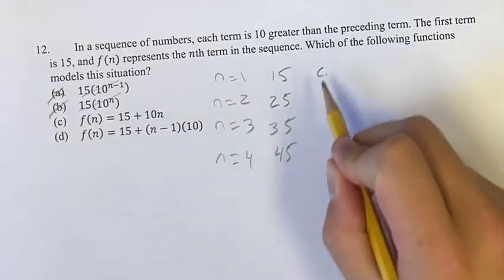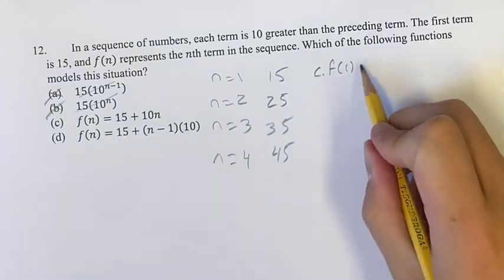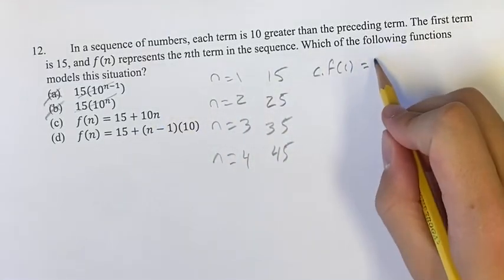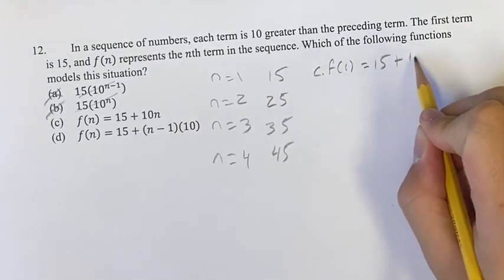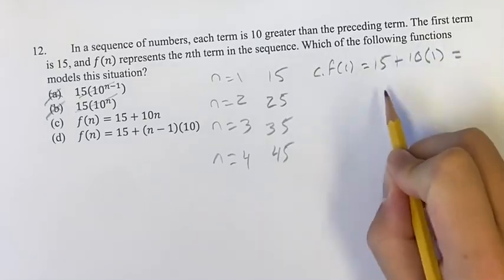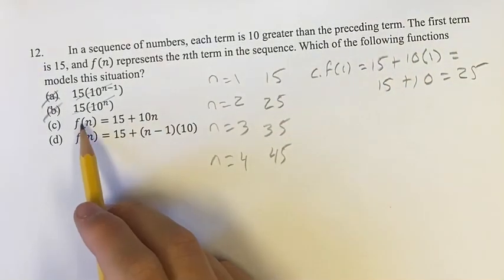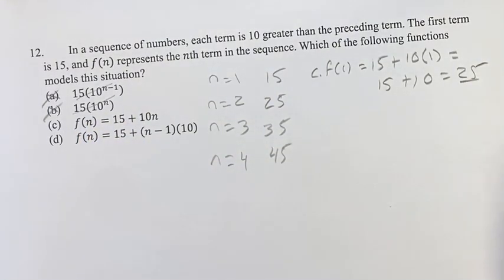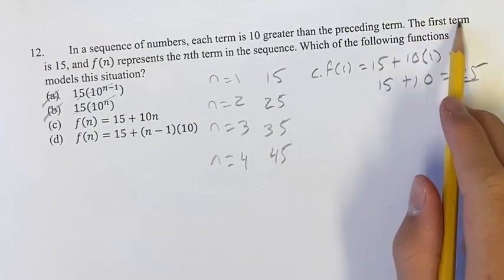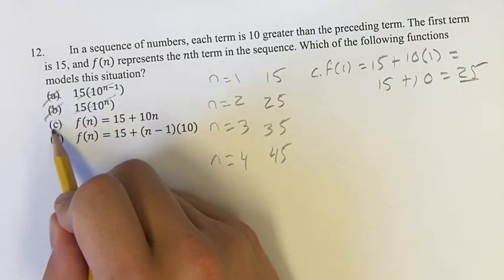So for c, f of 1, plugging in 1 for n in this equation would be 15 plus 10 times 1, which equals 15 plus 10, equals 25. So if c was our answer, the first term would be 25, which we don't find. We found the first term is 15, so c is not going to be our answer.